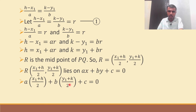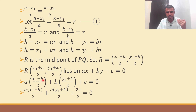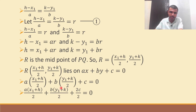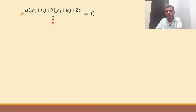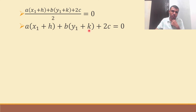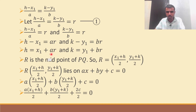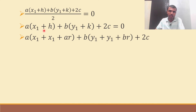So substituting: A times x1 plus h by 2 plus B times y1 plus k by 2 plus C equals 0. Write C as 2C by 2 so all terms have denominator 2. Adding numerators: A times x1 plus h plus B times y1 plus k plus 2C equals 0. Now H means x1 plus AR and K means y1 plus BR — substitute these values in place of H and K.